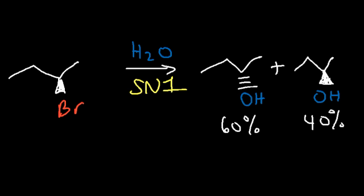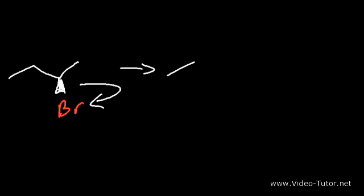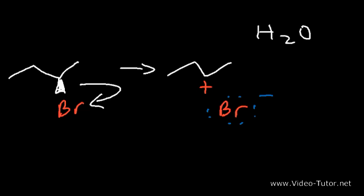Let's propose a mechanism to produce these two products. In an SN1 reaction, the first step is that the leaving group leaves and we have the formation of the carbocation. Now the bromide ion is not too far away — it's still in the vicinity of the carbocation. At this point water can attack the carbocation.